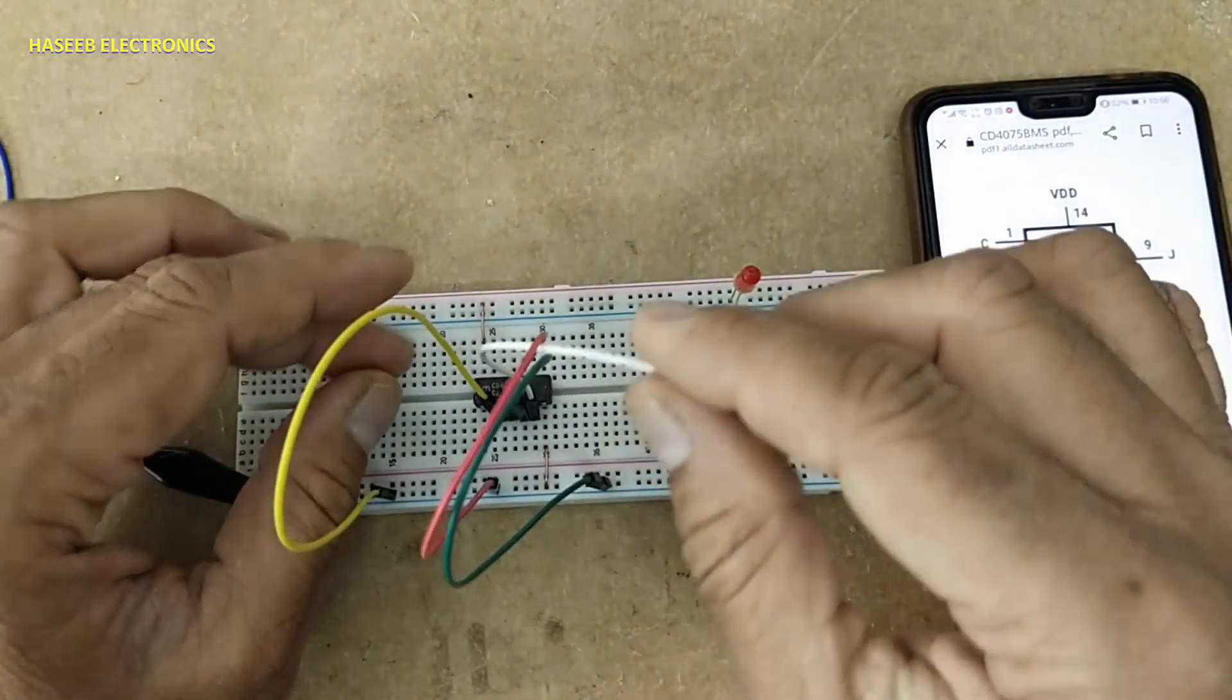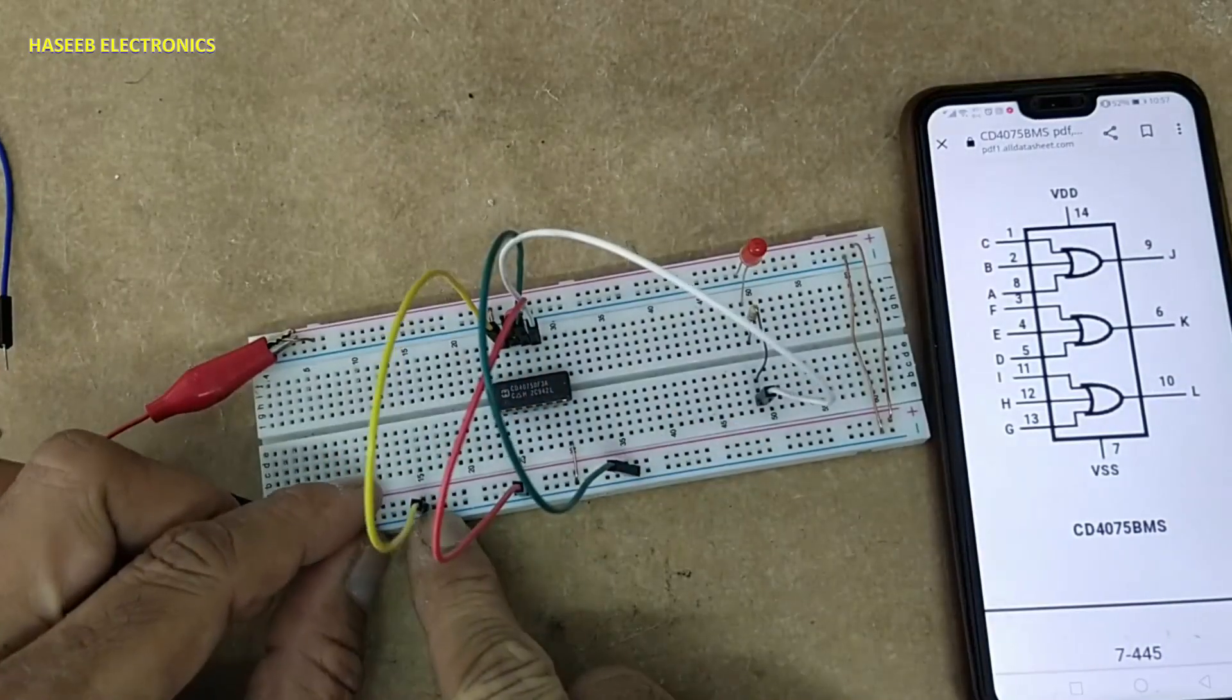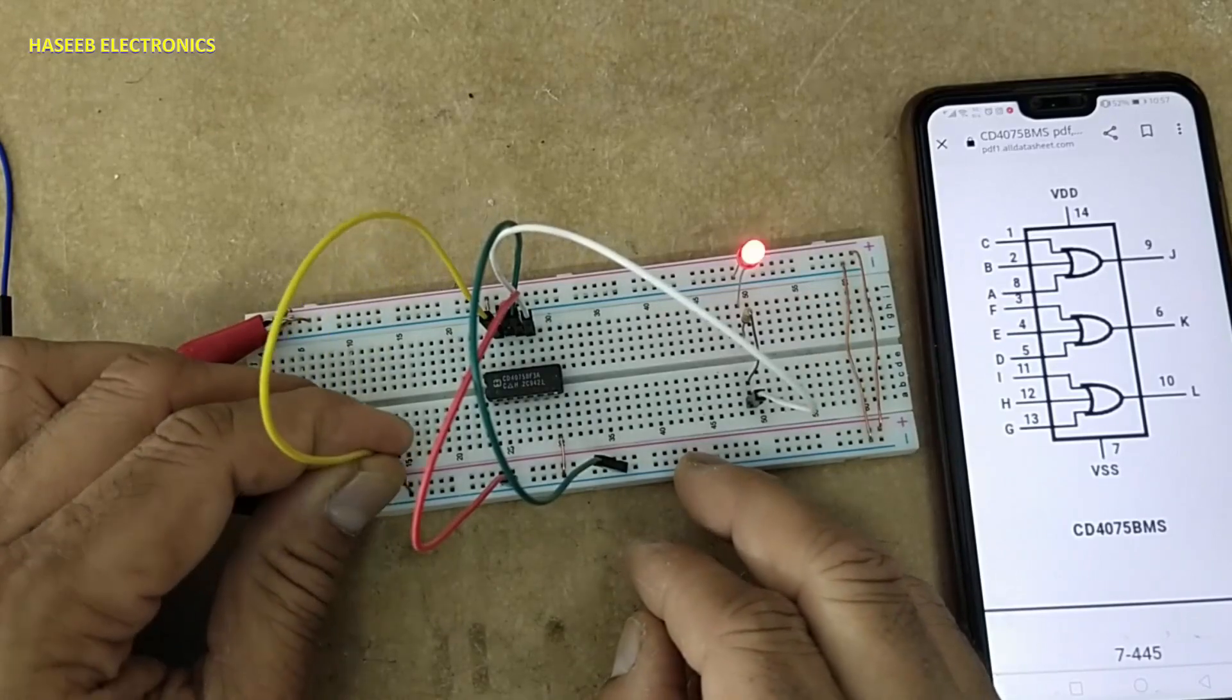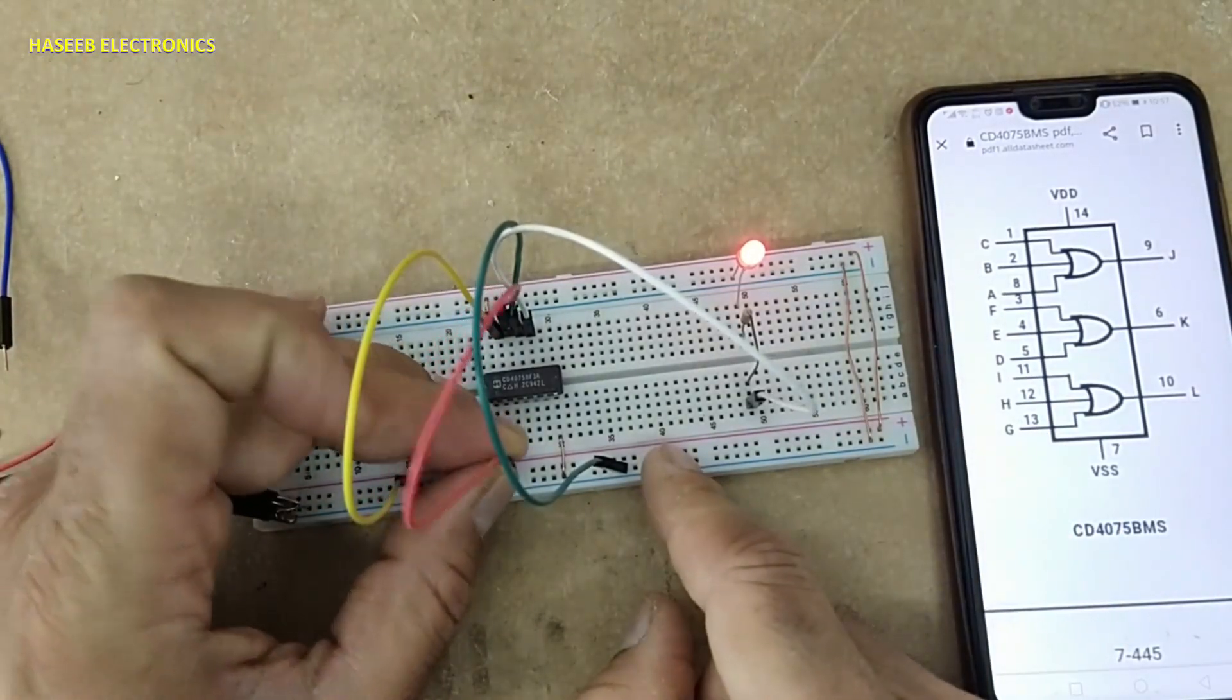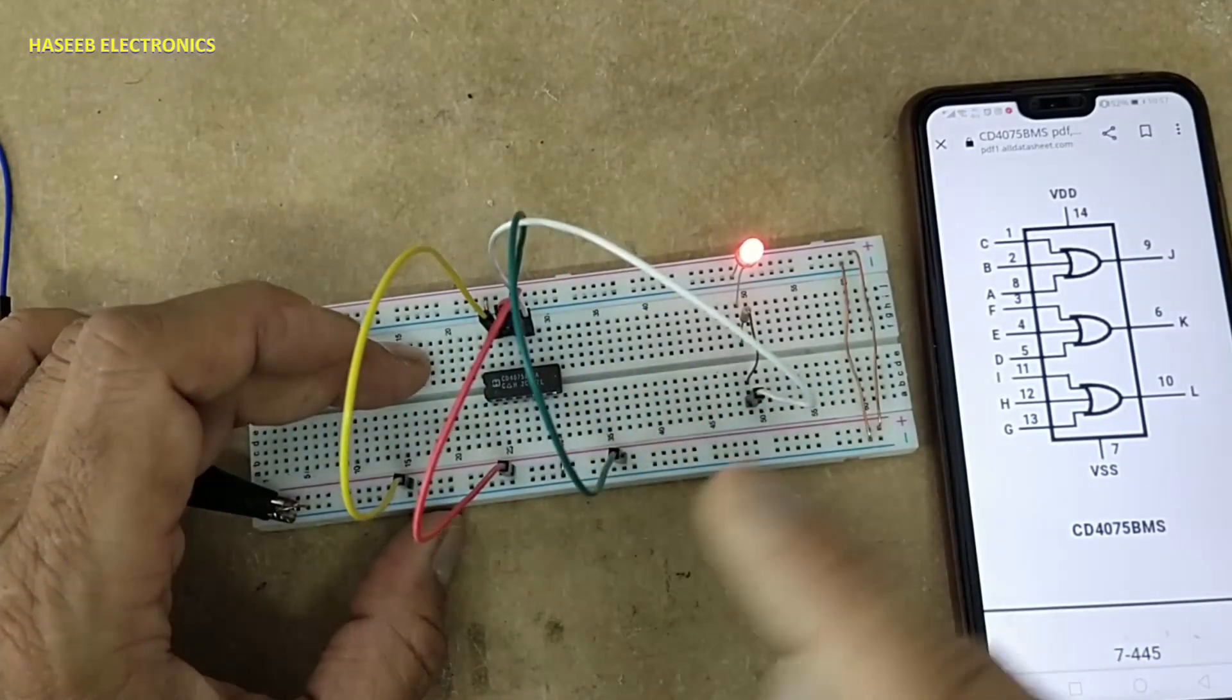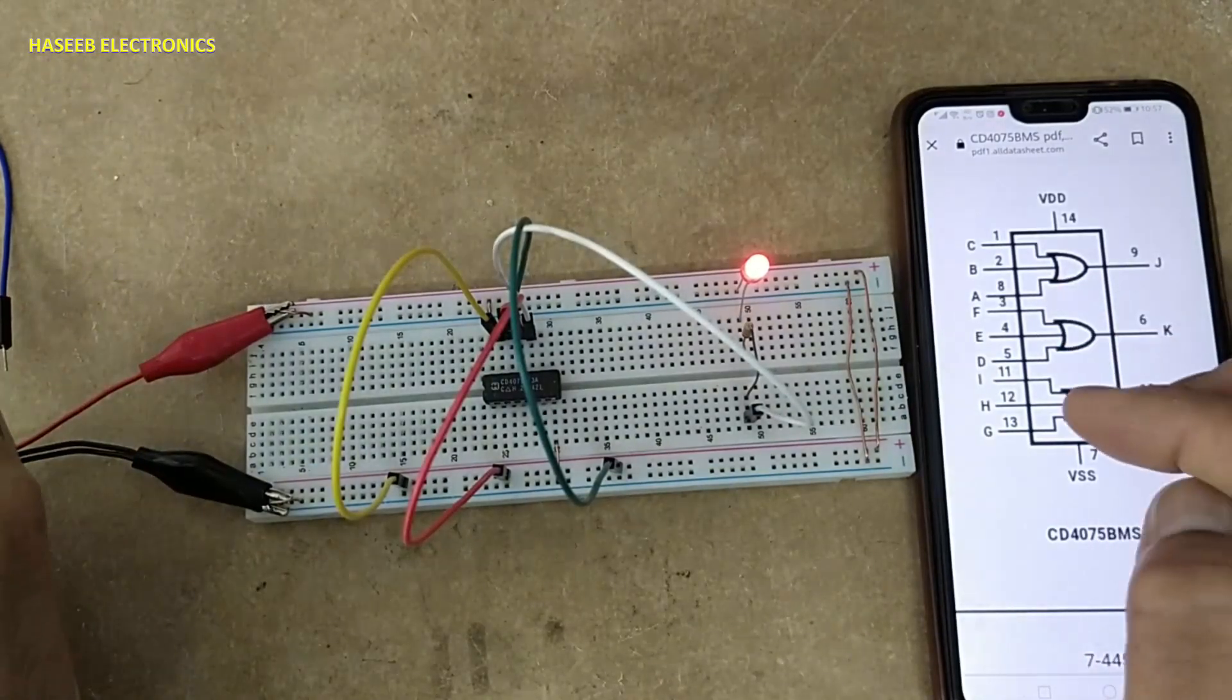Let's check the third gate. Pin number 10 is output, pins 11, 12, 13 are inputs. All inputs low, output low. Any one high, output high. Two inputs high, output high. All inputs high, output is high. This is CMOS triple three-input OR gate.